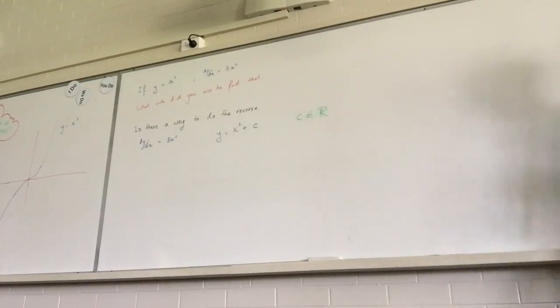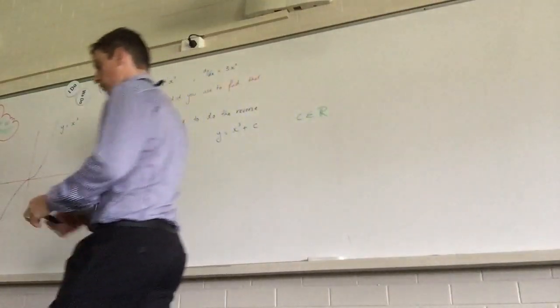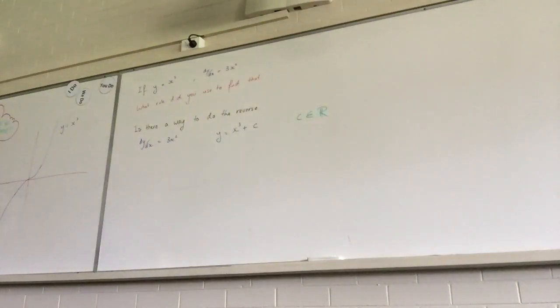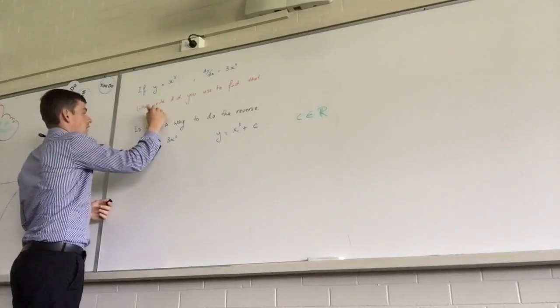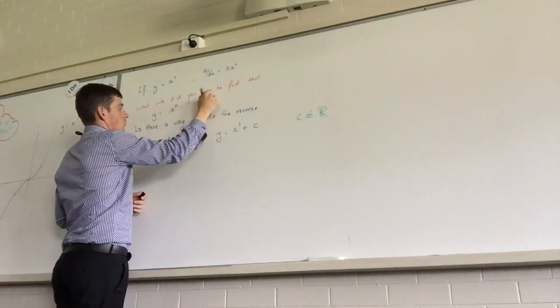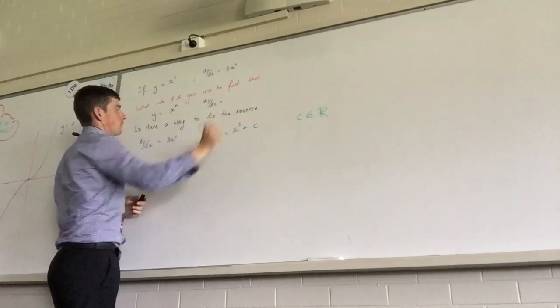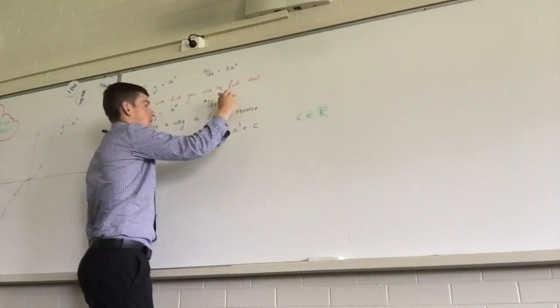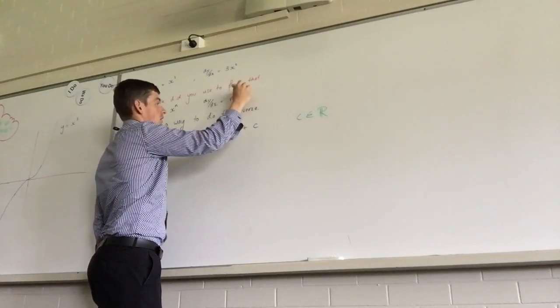So in the red, I've got, what did you use to find that rule? So we had y equals x to the power of 3 and dy dx equals 3x squared. How did we find that? So if I gave you the function y equals x to the power of n, dy dx must equal nx to the n minus 1.